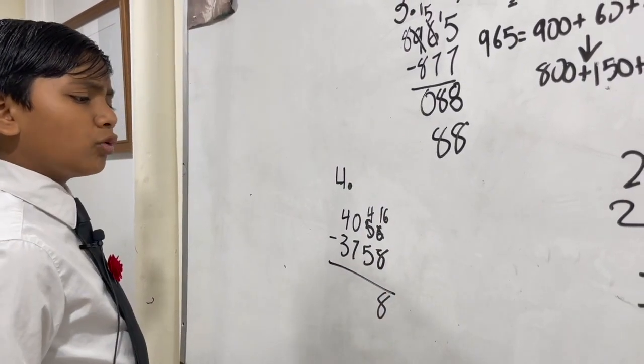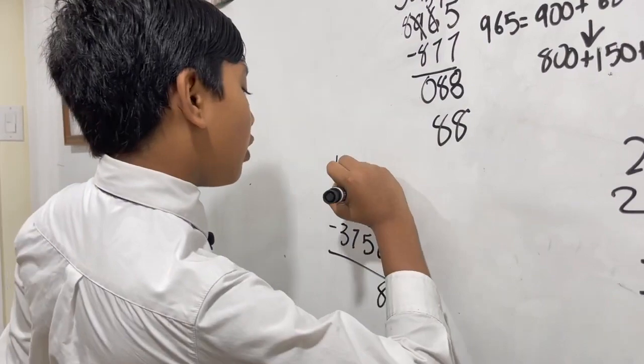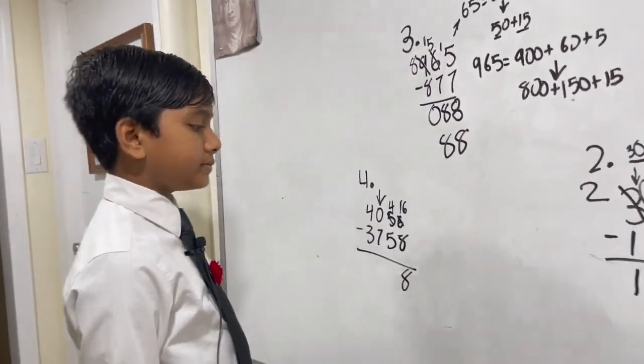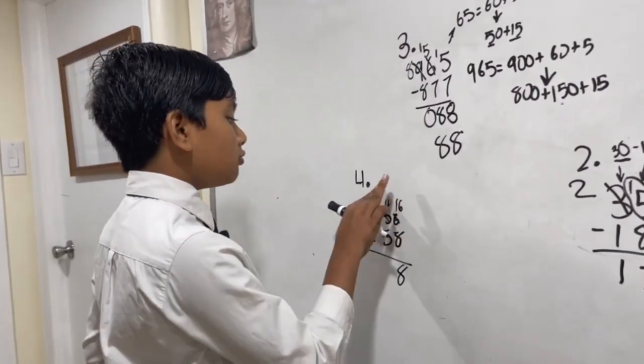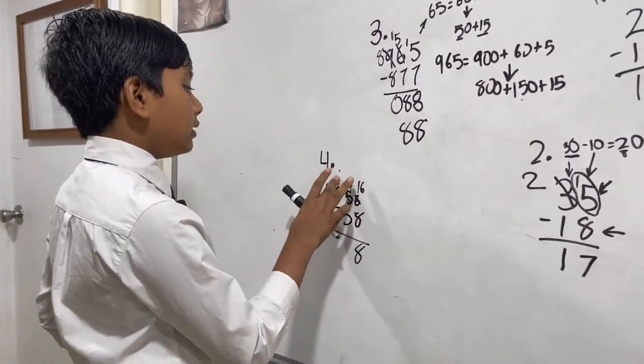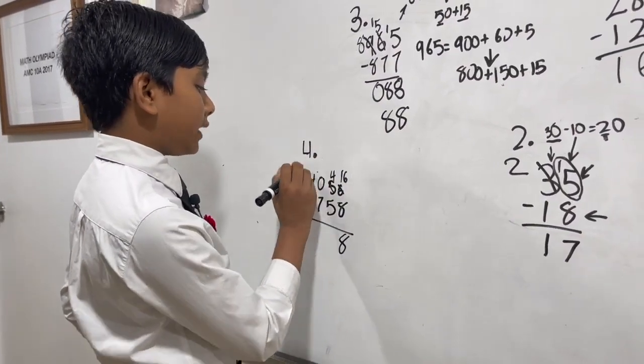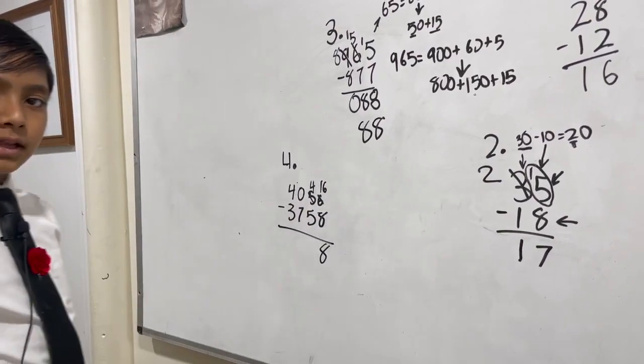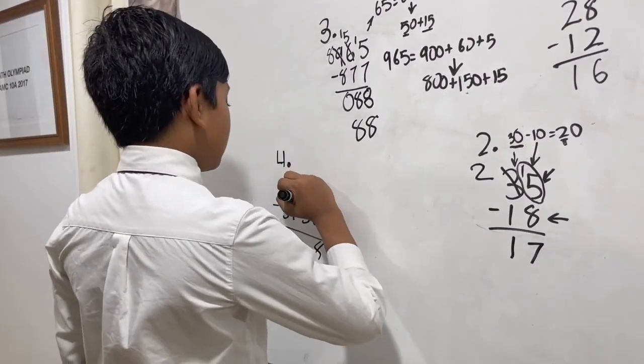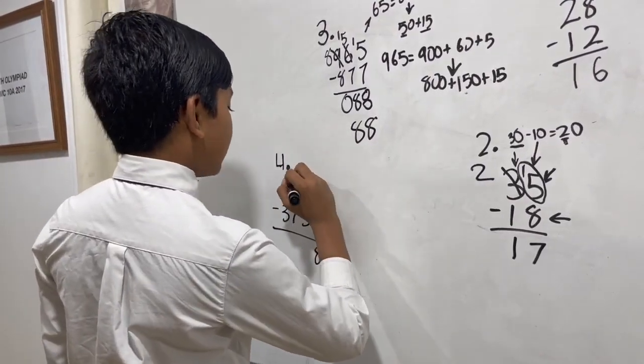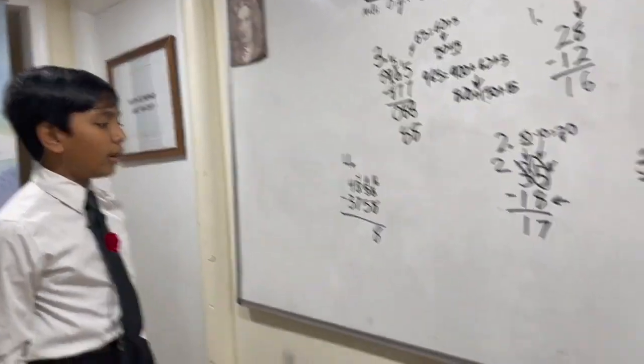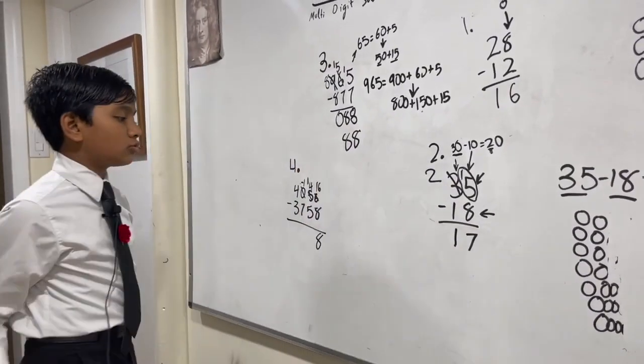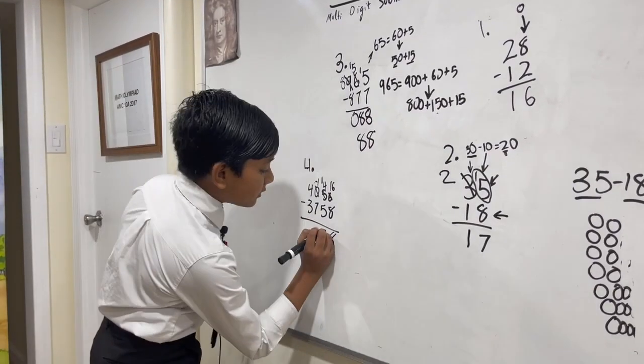But now we come to a problem: how can you borrow from a zero if zero represents nothing? Well, there are two ways to do this trick. Number one is borrowing from this 40 as a whole, making it 39. But the other one I feel is a little more clever. We're gonna take this and make it negative 1. So now this becomes 14.